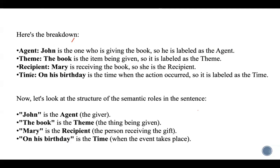Breaking it down clearly: Agent is John — the one who is giving the book. Theme is the book — the item that is being given. Recipient is Mary — she received the book. Time is 'on his birthday' — when she received the book. This is the structure of semantic roles in the sentence, and we need to label all the entities present.